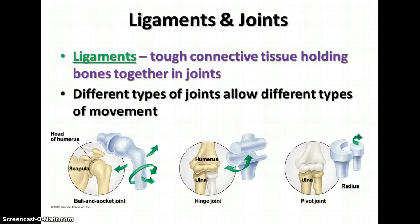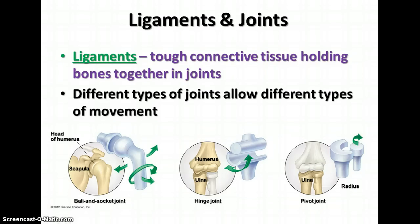Ligaments are connective tissue that holds bones together in joints, and joints allow different types of movement. We have ball-and-socket joints, like in your shoulder or hip, that allow rotational movement in several directions. We have hinge joints, found in the elbow and knee, that allow movement in two dimensions. We have pivot joints, also found in the elbow and wrist, that allow you to turn a joint in a circle. There are also gliding joints found in the wrist bones that are slightly different.